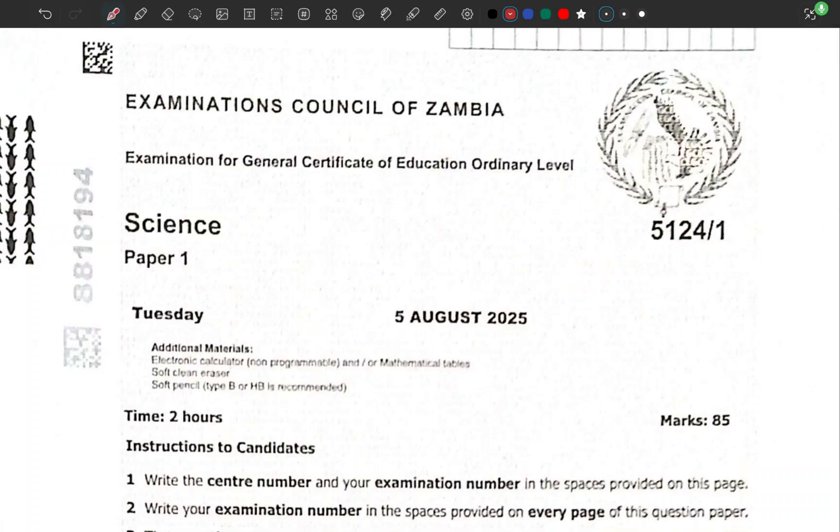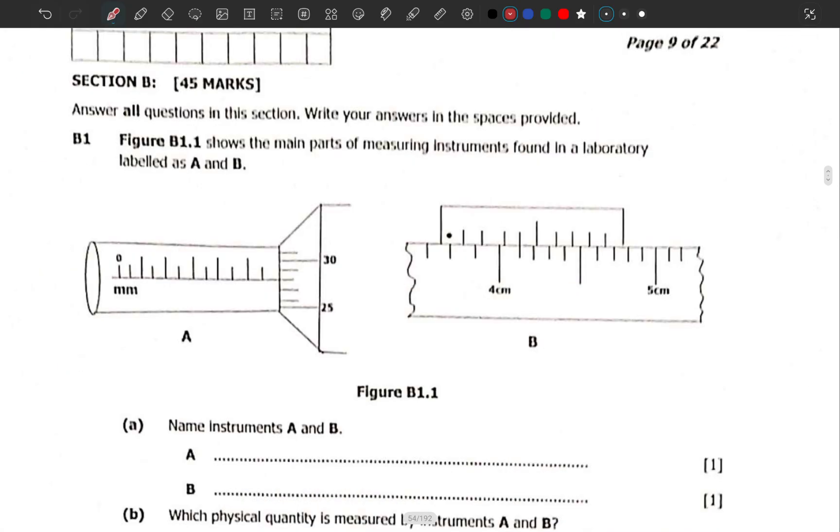In this video we are going to look at the Science Paper 1 2025 GCE which was written on the 5th of August, which is physics. I'm going to go to section B where we answer one question, and there's something which I want you to learn.